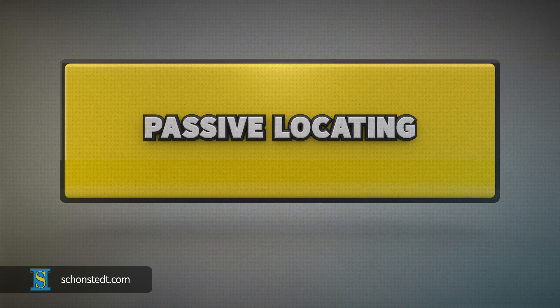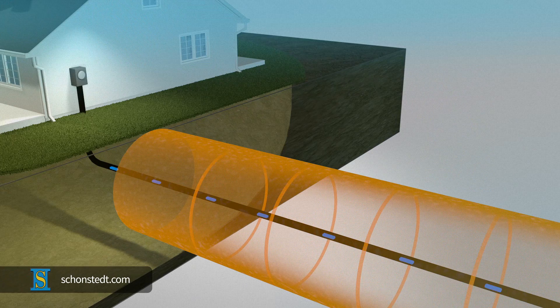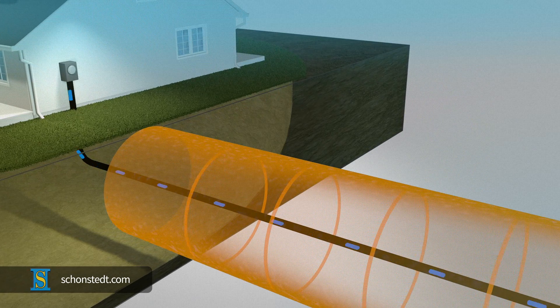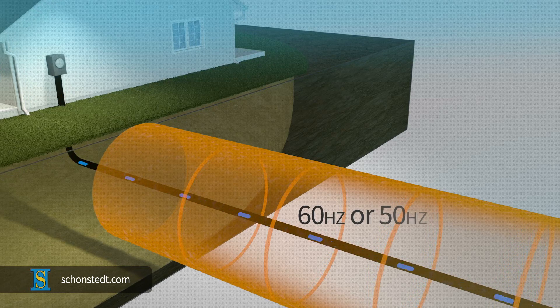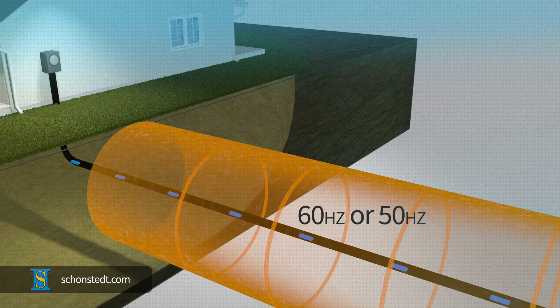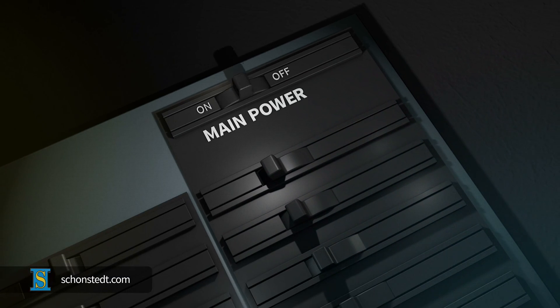Passive locating is the act of finding cables that already have a circulating current, such as buried power lines. The cable must be energized with a network distribution electrical current at a frequency of 60 or 50 Hz, depending on the part of the world in which you live. The passive method will not work if the power is off.